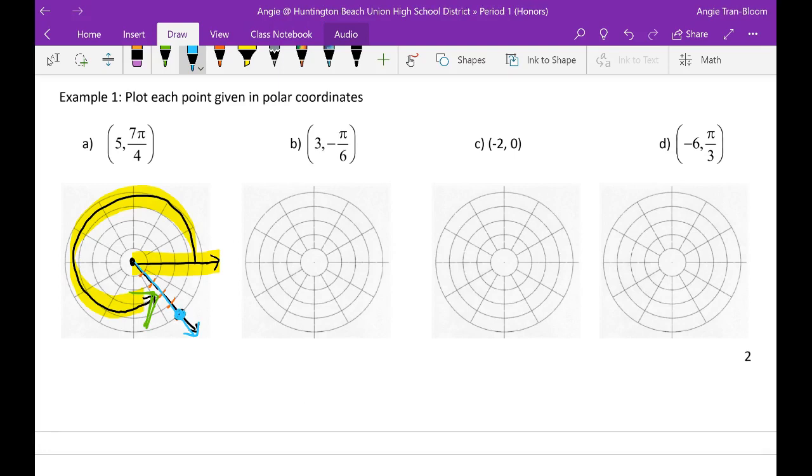So let's move on to b. Again, I'm going to draw my polar axis and the pole. Negative π over 6, negative, I'm going this way. I will now draw my π over 6 because since it's negative it's going to be clockwise. Now I need three units. I will not do tick marks because I already have many circles, but I will go three circles out to demonstrate that is my radius.